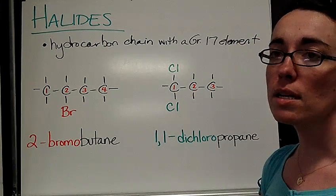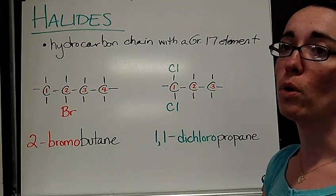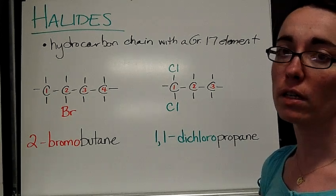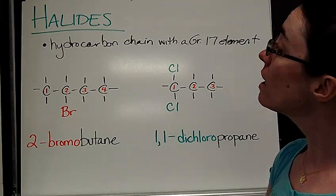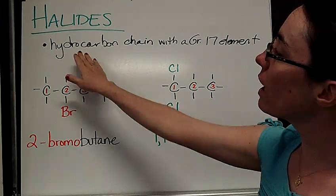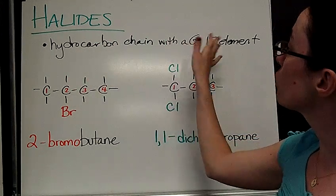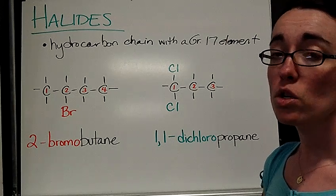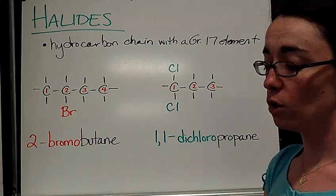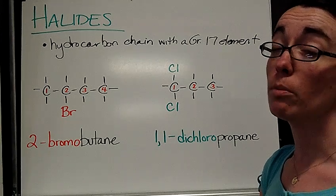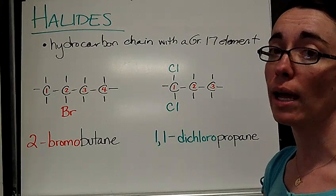The first example of a functional group, or something that's hanging off of a carbon and hydrogen chain, is called a halide. So we have a hydrocarbon chain with a group 17 element hanging off of it. So that could be fluorine, it could be chlorine, it could be bromine, or it could be iodine.